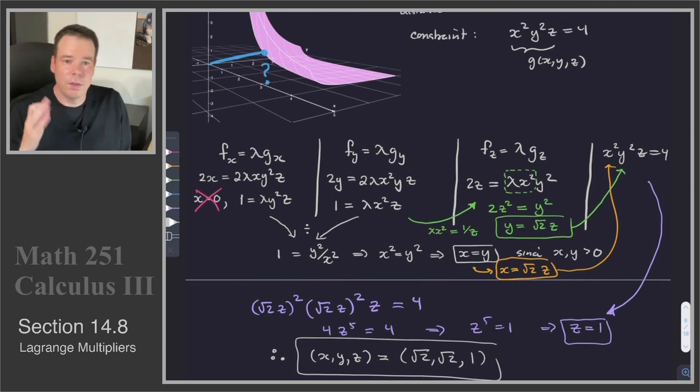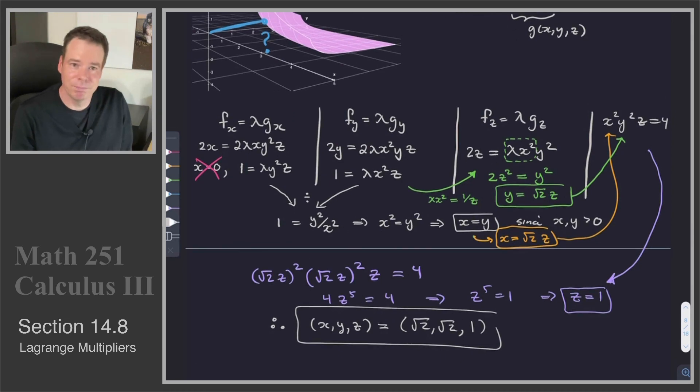So we found the one candidate for being the point that's closest to the origin. And if we think about the problem, there has to be a point that's closest to the origin. There's, I mean, points we can get as far as we want away from the origin. We can go as far as we want just by picking points with large x and y values, for instance. It could have small z values, but large x and y values, we can get as far away from the origin as we want. But there's going to be one point that's closest, and we only found one candidate for it. So that's got to be it. So this is the point closest to the origin that is on the surface.